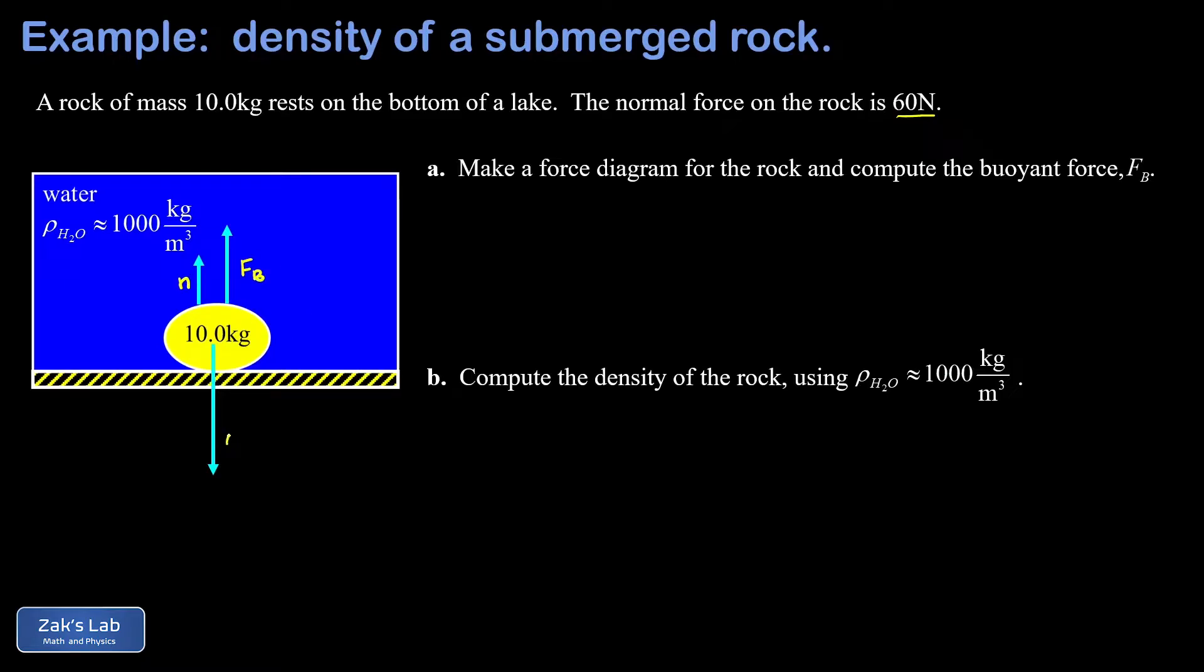So we've got our force vectors in the diagram: the normal force n, the second upward force is the buoyant force, and finally the downward force is the weight of the rock mg. Because the rock is in equilibrium all of these forces must balance.